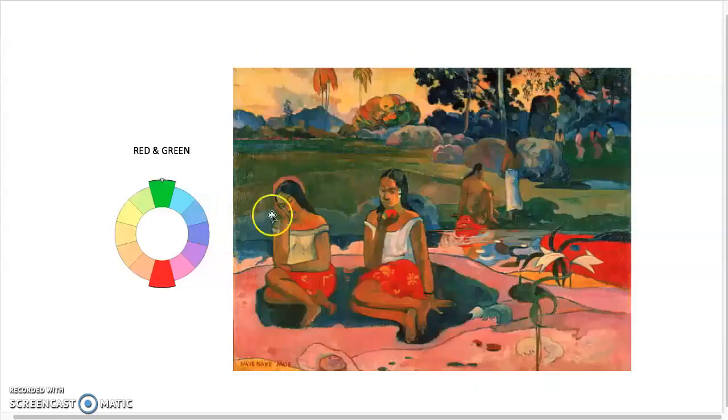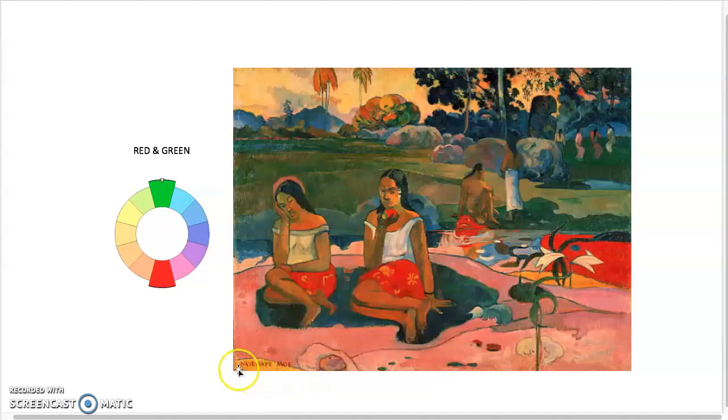And making neutrals. Here, this is a piece by Gauguin. And you have the idea of the red and the greens being like a way to create Tahiti. So he went down to Tahiti and painted a lot in his style. And you can see he's making a lot of these neutrals throughout here, but actually mixing red and green together and getting and adding yellow.